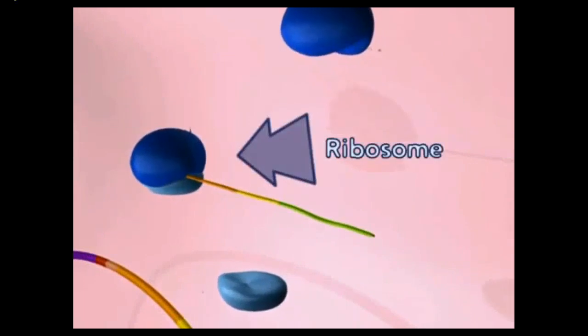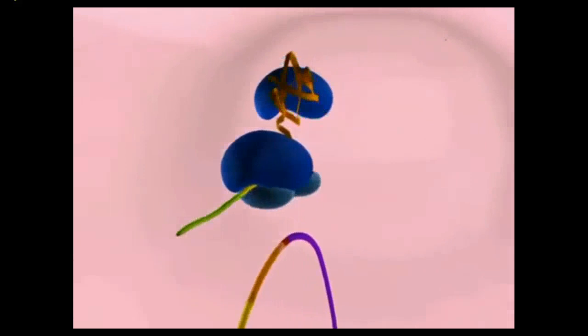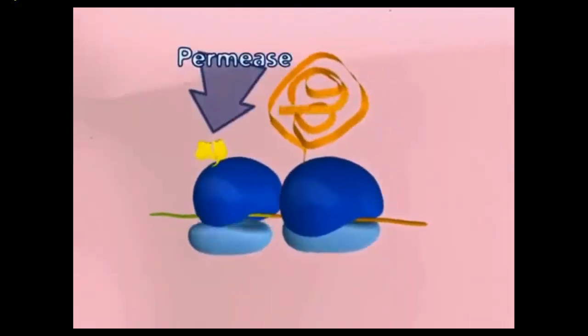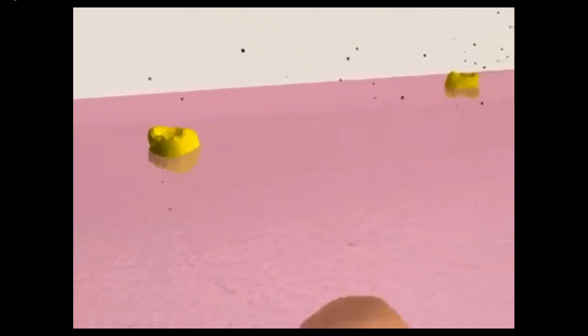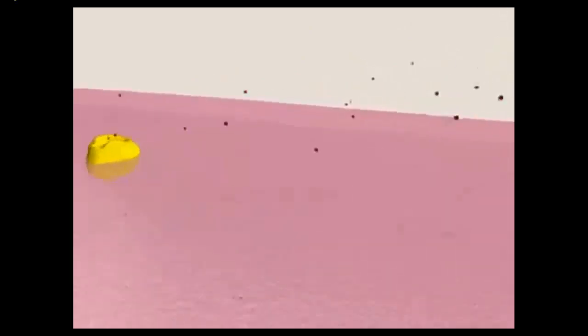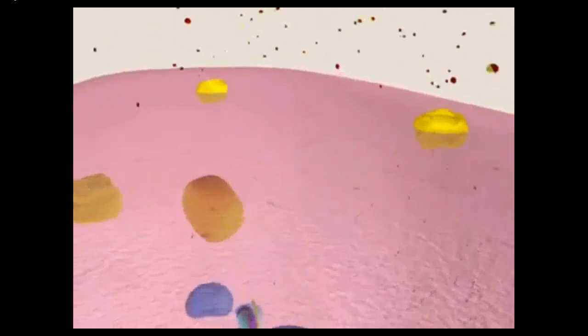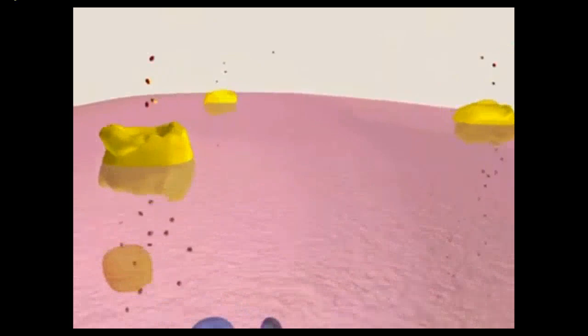Ribosomes then bind to the mRNA and the two proteins are translated. The first protein is beta-galactosidase, which breaks down lactose into two simple sugars. The second protein is permease, a membrane-bound protein. When embedded in the cell membrane, permease functions to provide a direct route for lactose outside the cell to be imported into the cell. This import occurs at a much greater rate than the passive transfer we first observed. Because translation continues inside the cell, other permease proteins become embedded in the membrane, further increasing the rate at which lactose enters the cell.